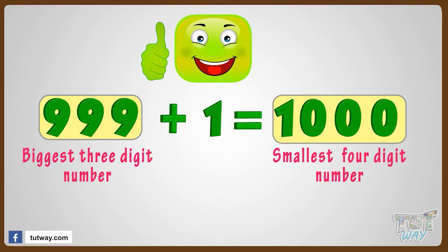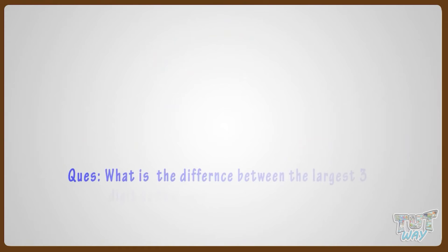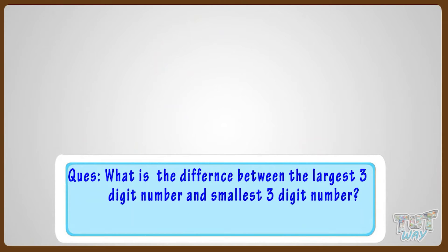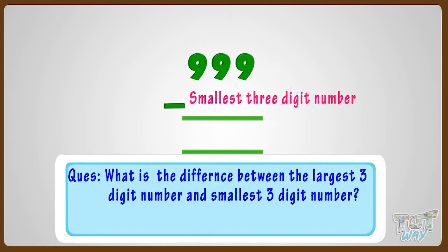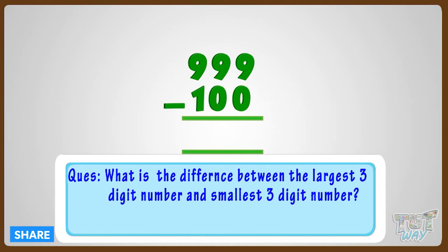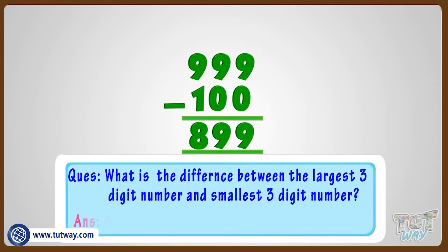What is the difference between the largest three-digit number and the smallest three-digit number? Let's find it out. We need to subtract the two numbers. The largest three-digit number is 999, and the smallest three-digit number is 100. Subtract 100 from 999 and we get 899.